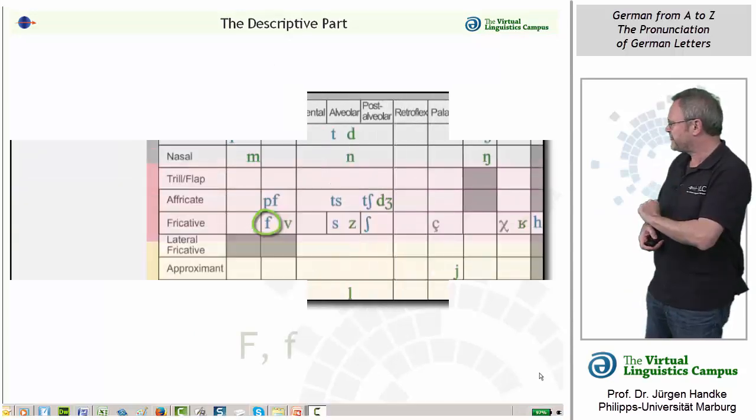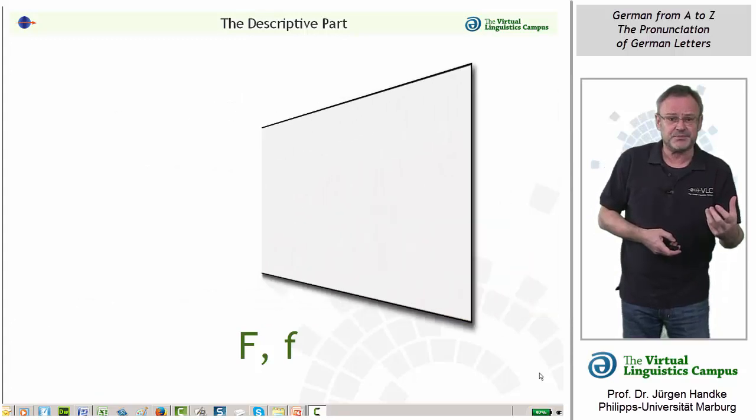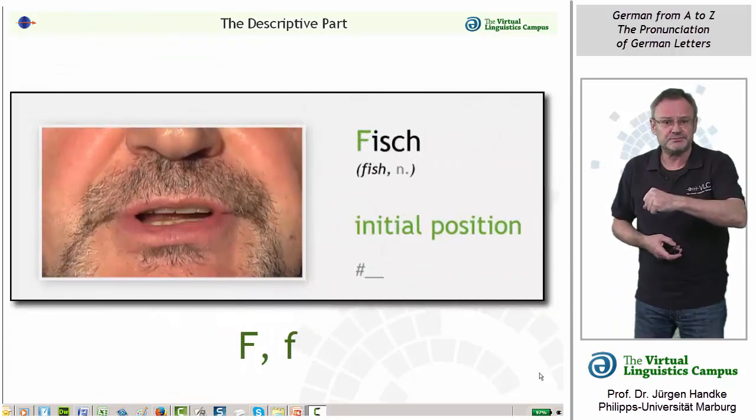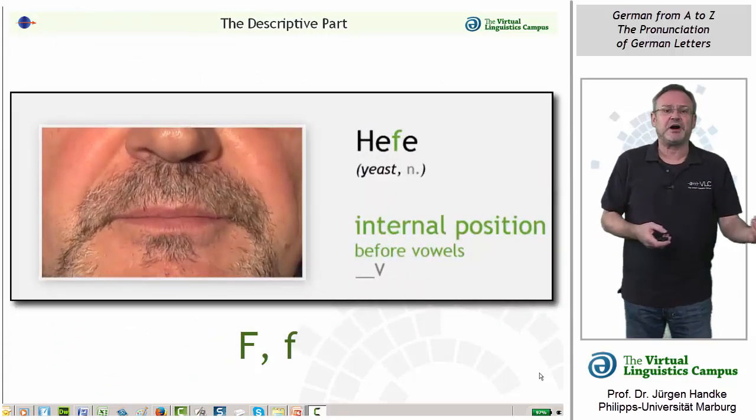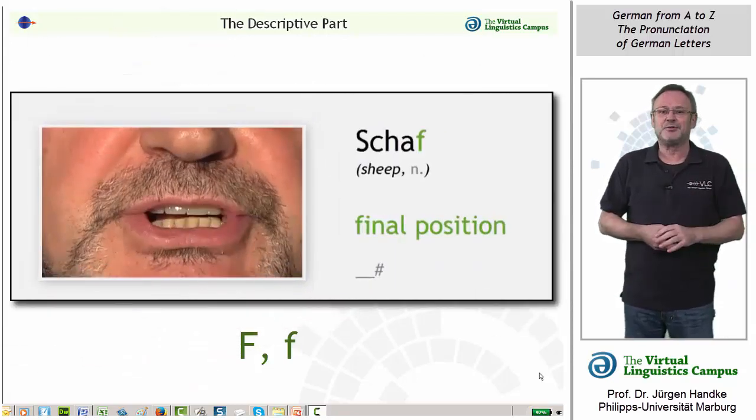Take the letter F as an example. It occurs in several positions: in the initial position, internally before vowels, internally before consonants, and word finally.